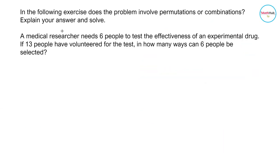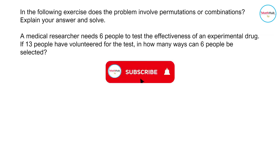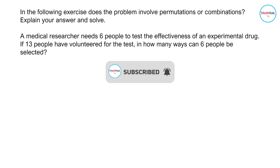In this next set of exercises, we will determine whether the problem involves permutations or combinations and solve the problem. A medical researcher needs six people to test the effectiveness of an experimental drug. If 13 people have volunteered for the test, in how many ways can six people be selected?